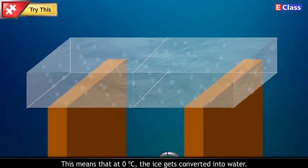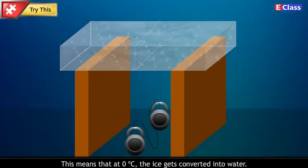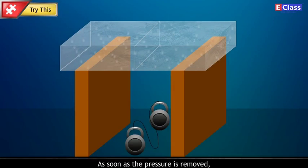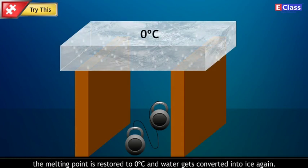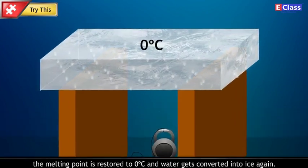This means that at 0 degree Celsius, the ice gets converted into water. As soon as the pressure is removed, the melting point is restored to 0 degree Celsius and water gets converted into ice again.